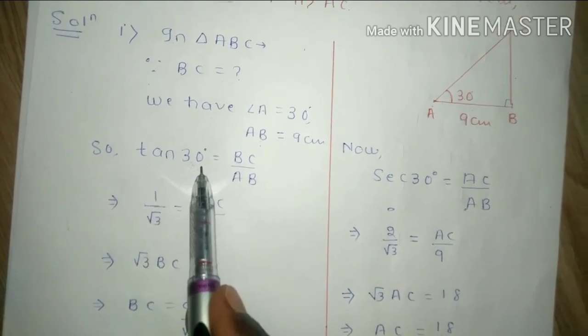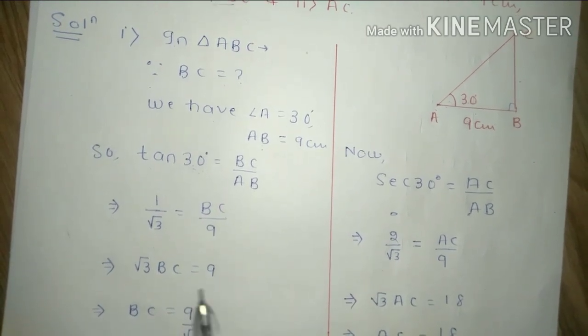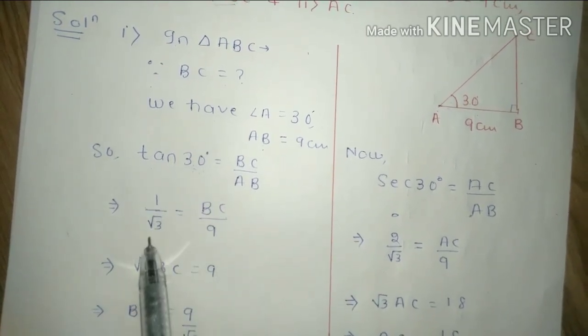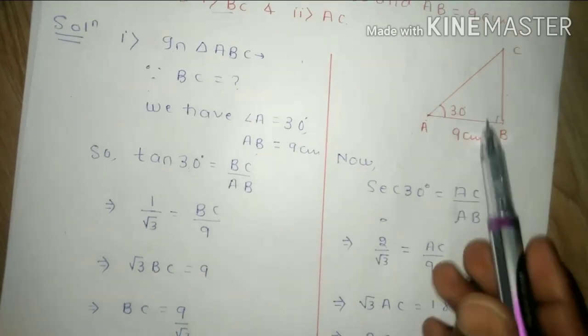Then you will see tan value is 1 upon under root 3, BC upon AB which we will take 9.